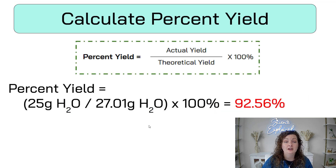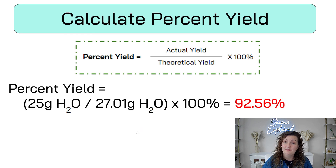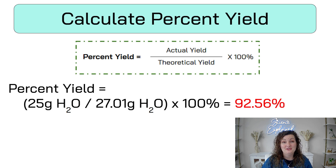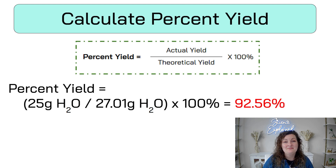Let's go ahead and work on our percent yield now. Percent yield is going to be the actual yield divided by theoretical. So our actual — they gave us in our word problem — is 25 grams of water, divided by what we just found to be the theoretical, 27.01 grams of water. Times it by 100 and you get 92.56%. And that is how you find percent yield. Go ahead and like this video, subscribe to see more. And if you need any more help with chemistry or stoichiometry, look on my channel — I have tons of videos for you. I'll see y'all next time. Bye everybody.